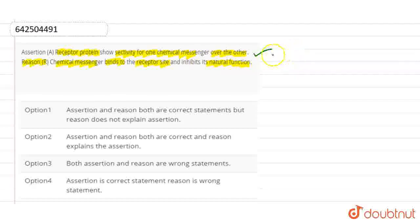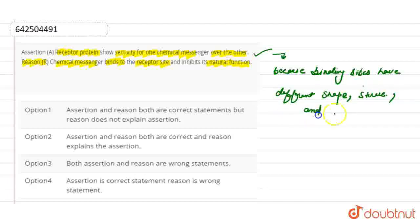So here, the answer for this assertion is that because binding sites have different shape, structure and amino acid composition, that's why the receptor proteins show the selectivity for one chemical messenger over the other. So the assertion is correct here.